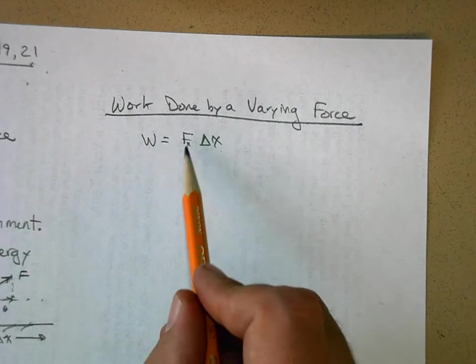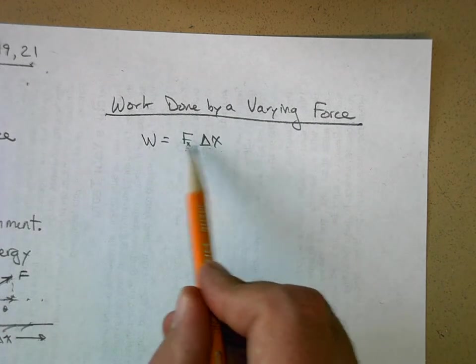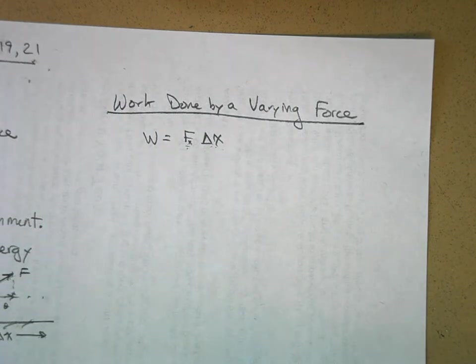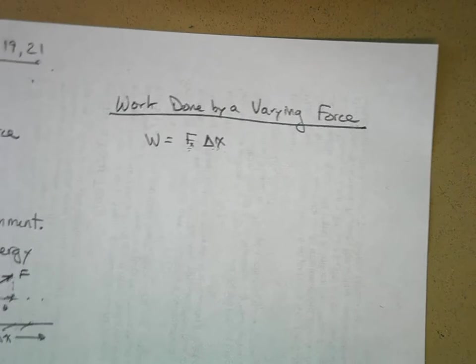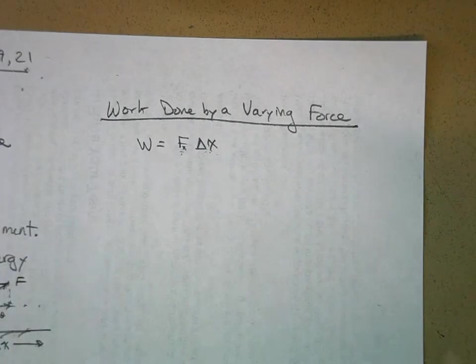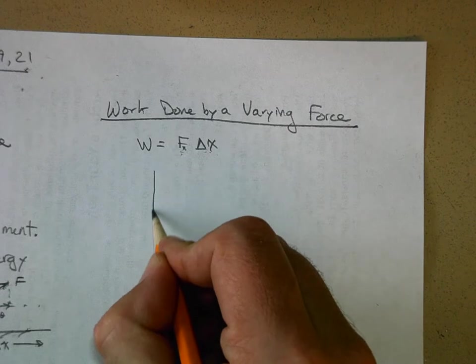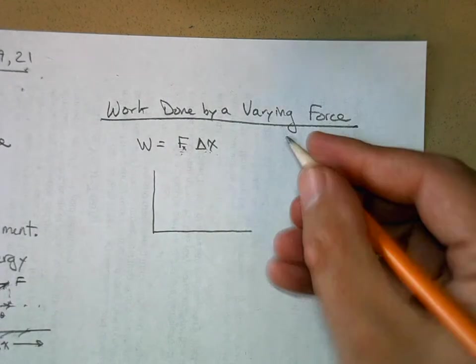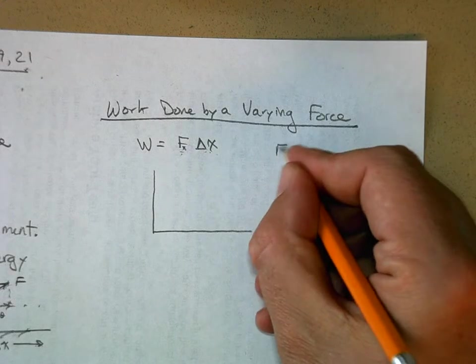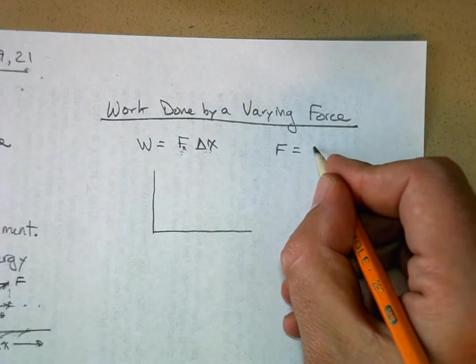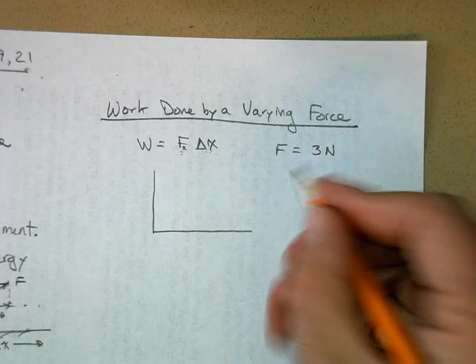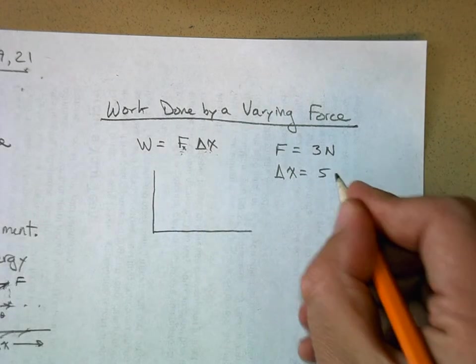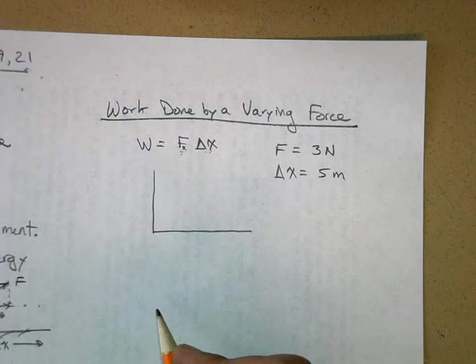Notice that I've got a product here of two quantities to get another quantity. Think about what we've done every time we've seen that. We draw a graph so this can be represented graphically. For example, let's say that our force is a constant force and it's going to be three newtons.